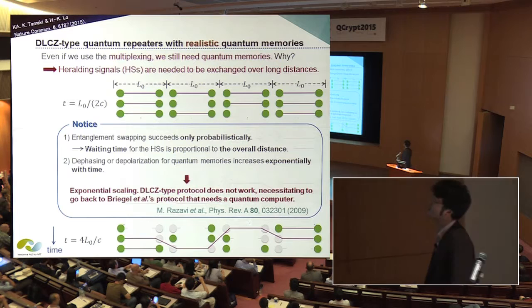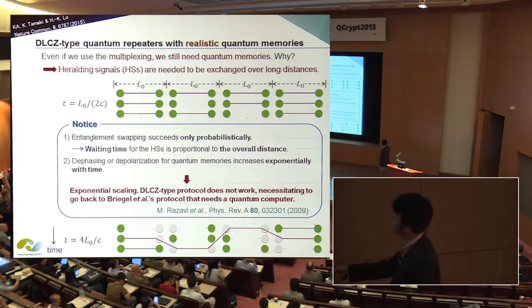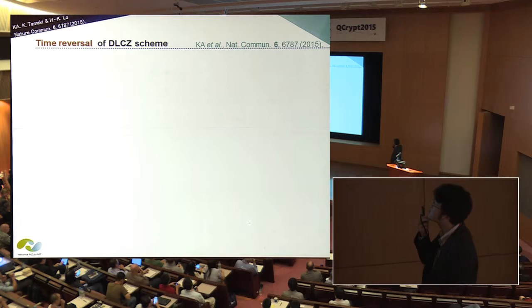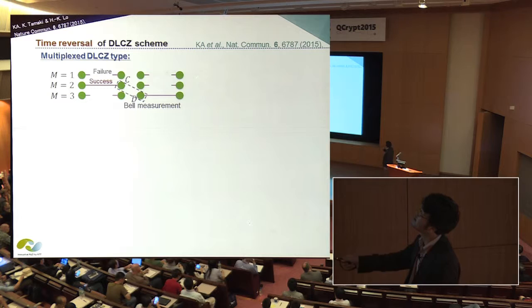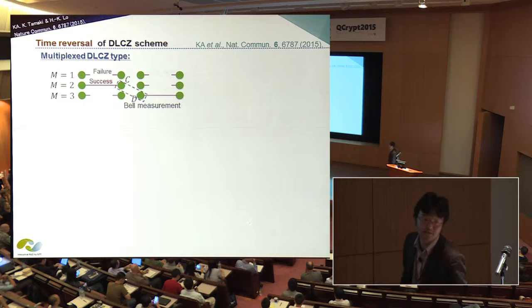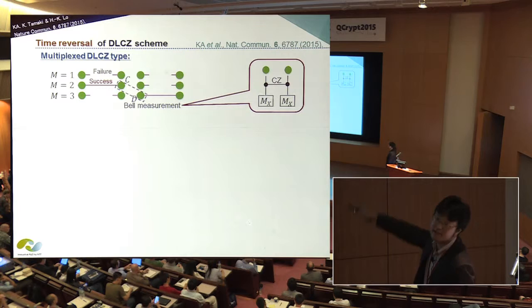This is the reason why quantum memory is required. There are two key facts here: we assume entanglement swapping succeeds only probabilistically, so the waiting time for exchanging heralding signals is proportional to overall distance. In addition, dephasing or depolarization for quantum memory increases exponentially with time. By combining these facts, we conclude the exponential scaling of the DLC-type quantum repeater. In order to perform polynomial scaling, we need to perform deterministic Bell measurement, or use the Briegel-Dür scheme assuming a matter qubit-based quantum computer at each repeater node. In order to perform the quantum repeater using only photons, I would like to introduce a time-reversal version of the DLC quantum repeater.